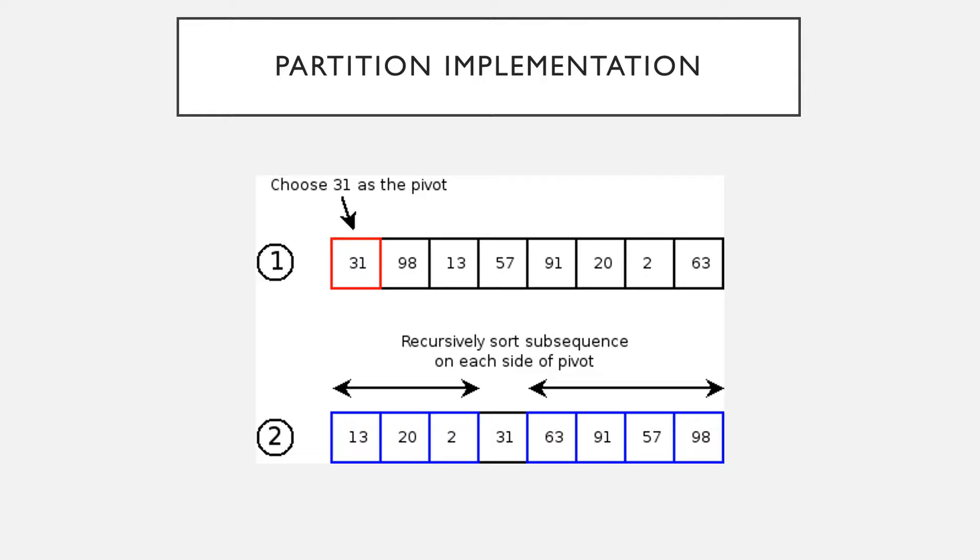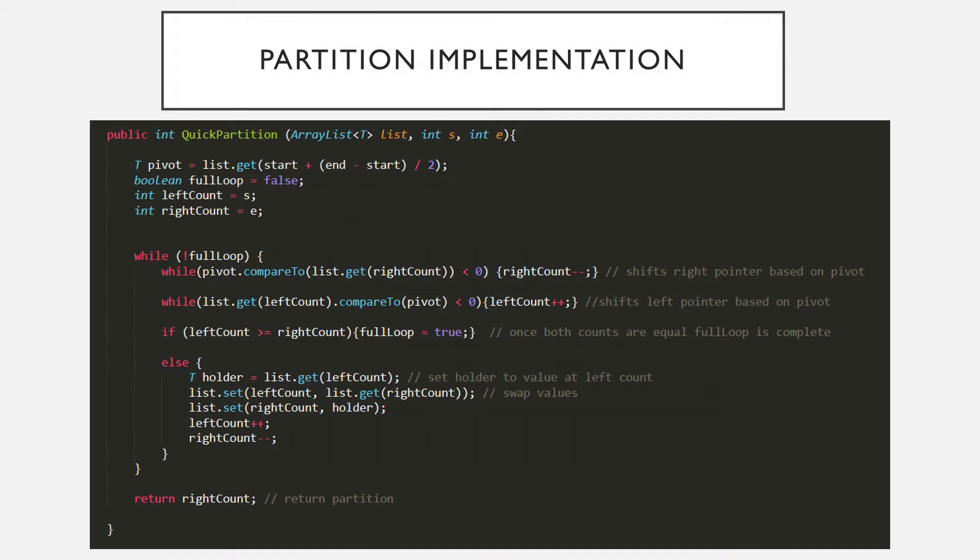The partitioning algorithm uses two index variables, L and H, low and high, initialized to the left and right sides of the current dataset.